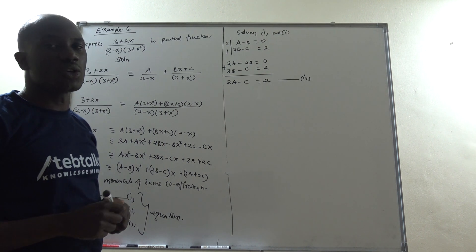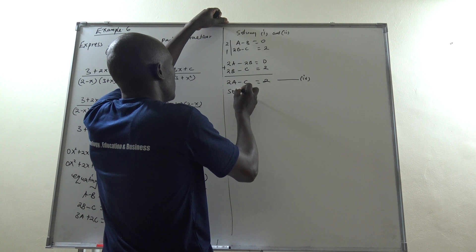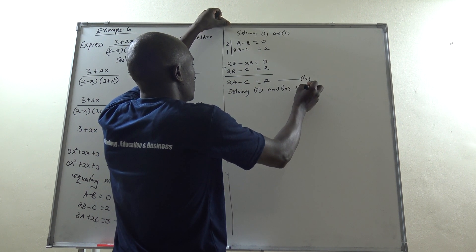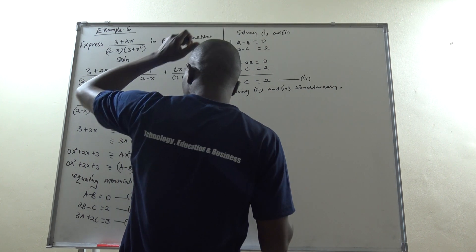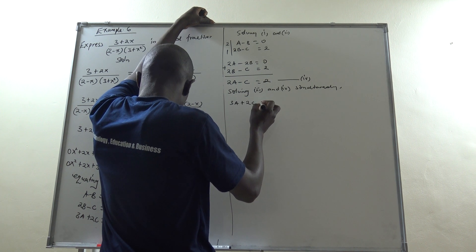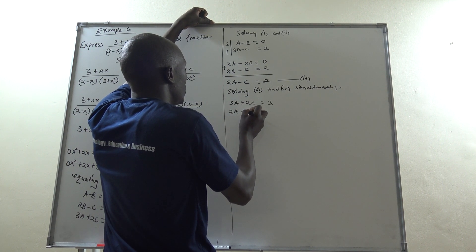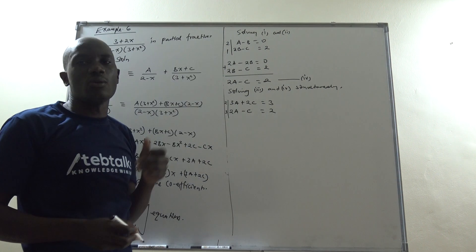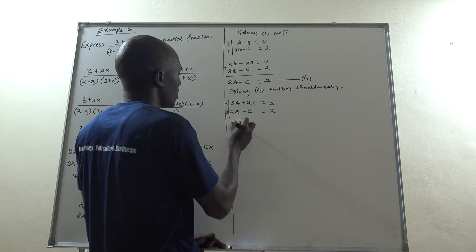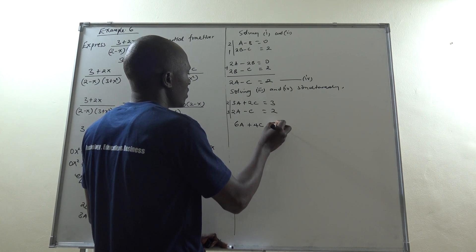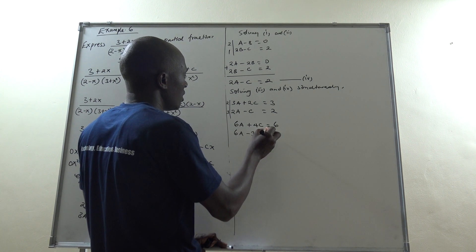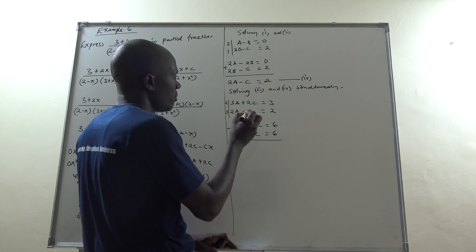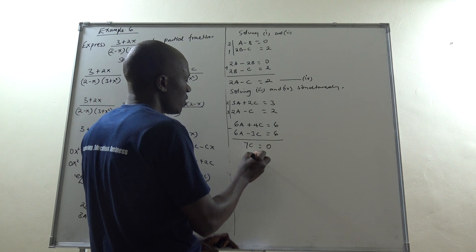Now solving equations (3) and (4) simultaneously to eliminate A: multiply equation (3) by 2 to get 6A + 4C = 6, and multiply equation (4) by 3 to get 6A − 3C = 6. Subtracting gives 7C = 0, so C = 0.